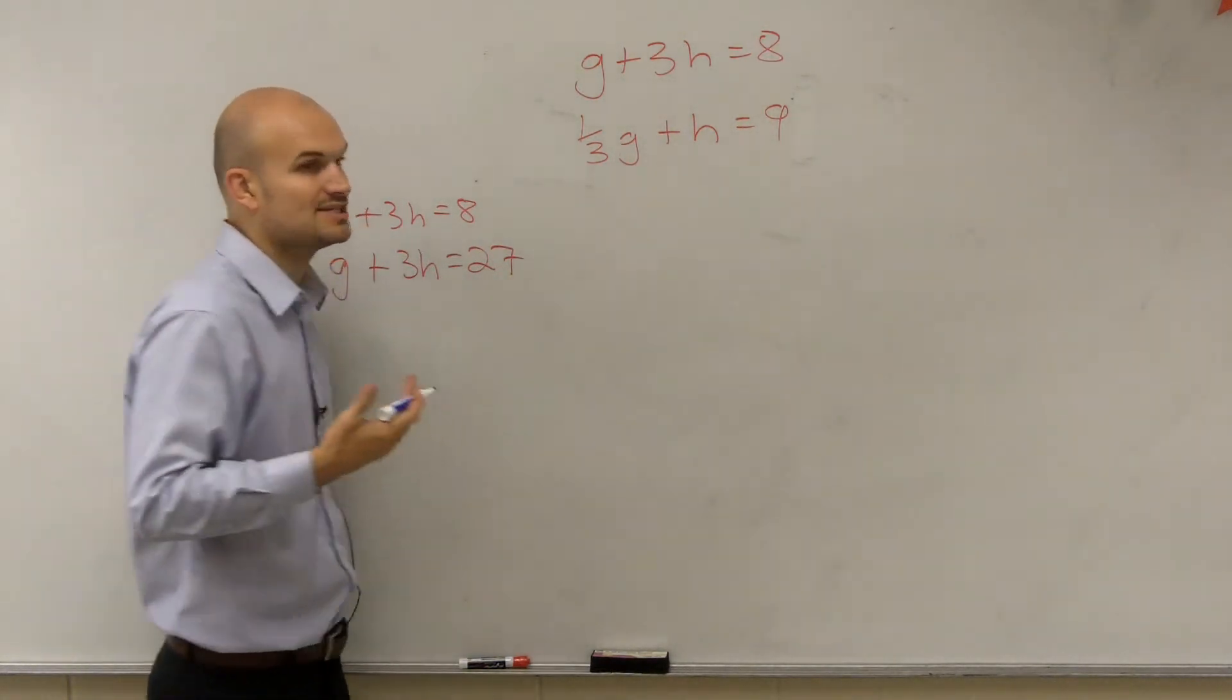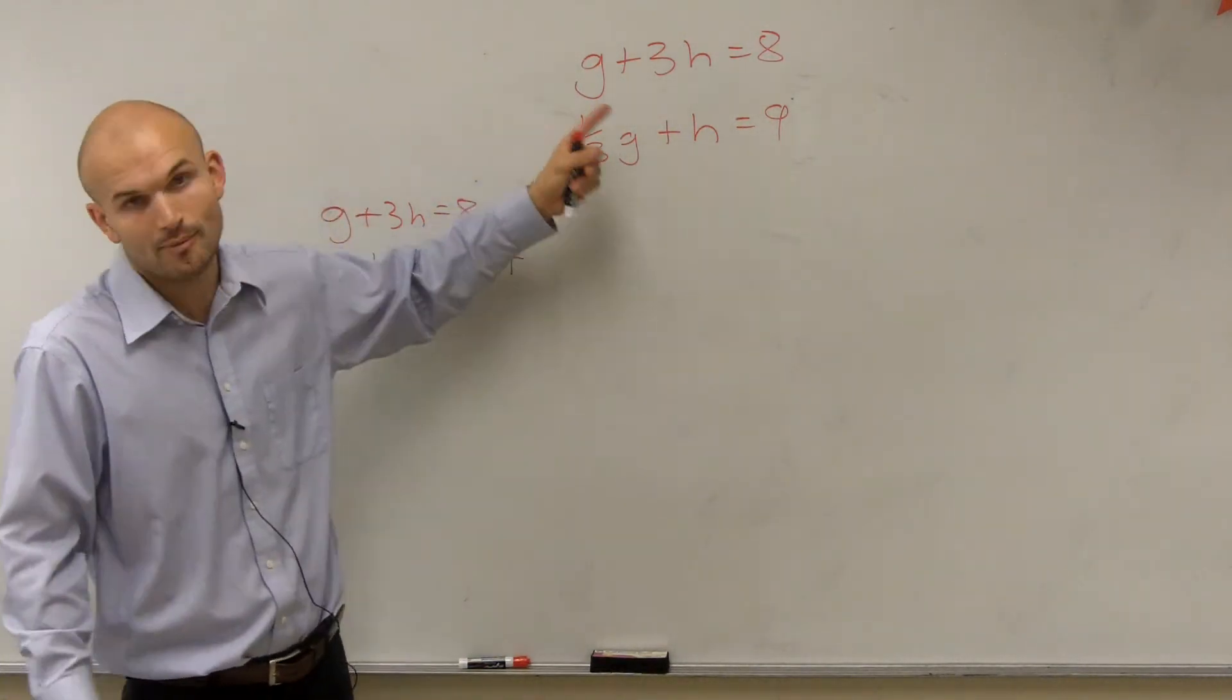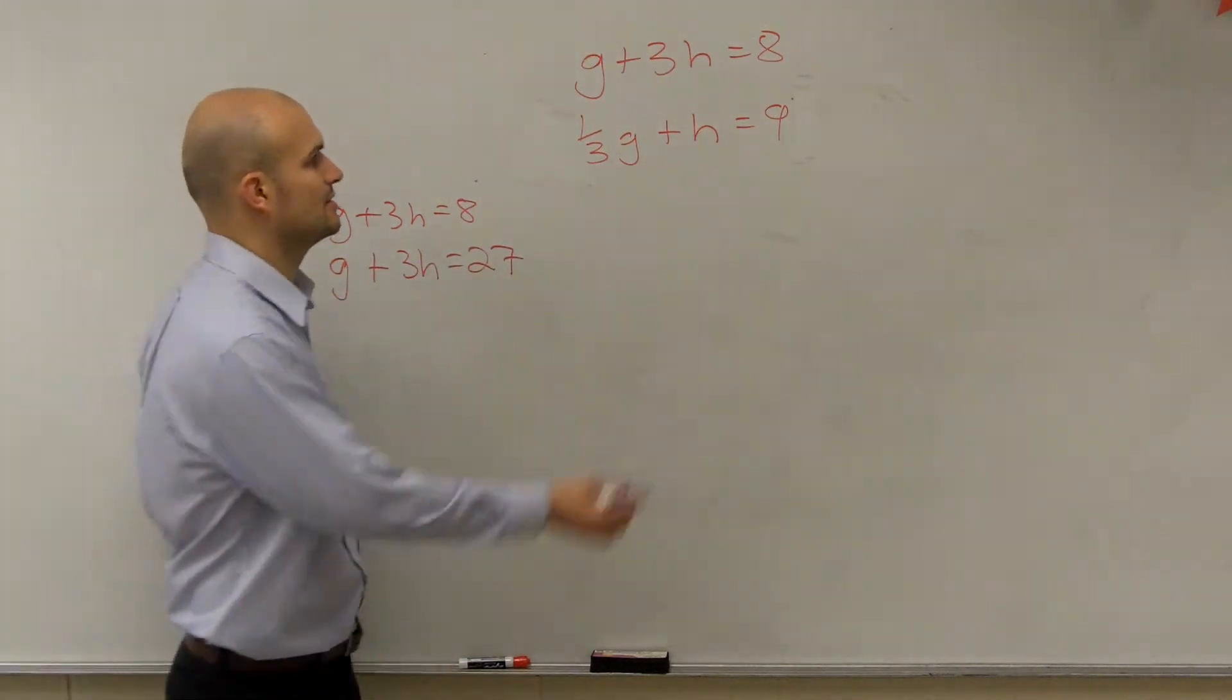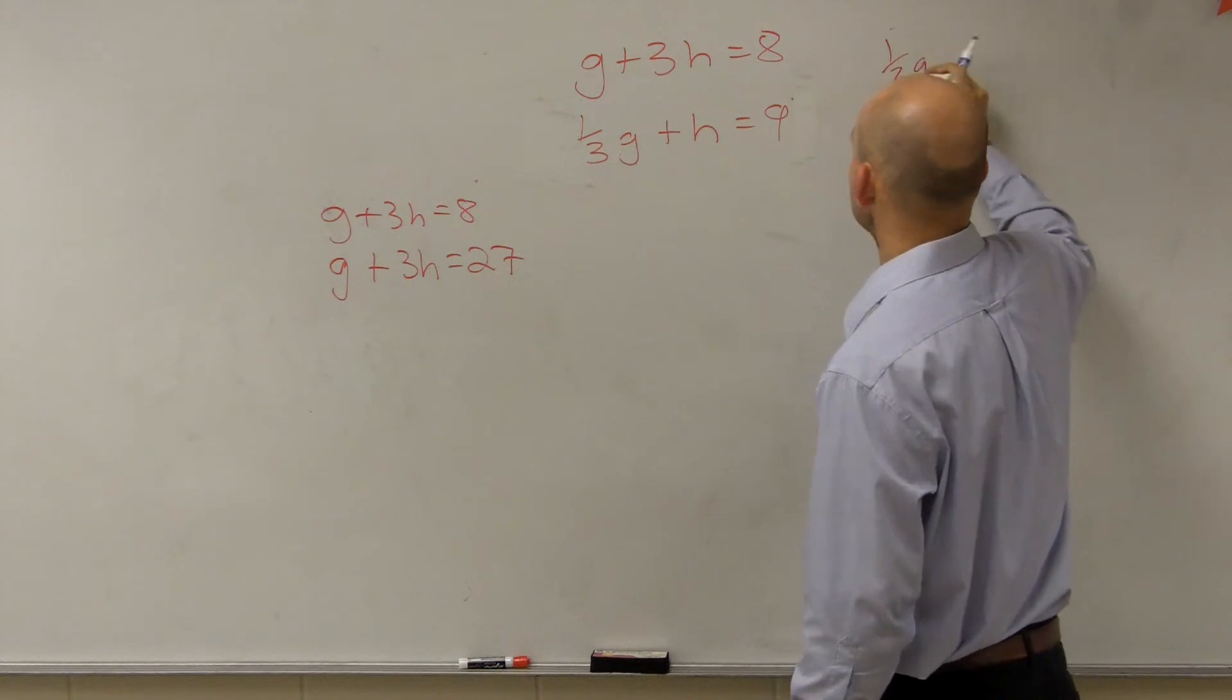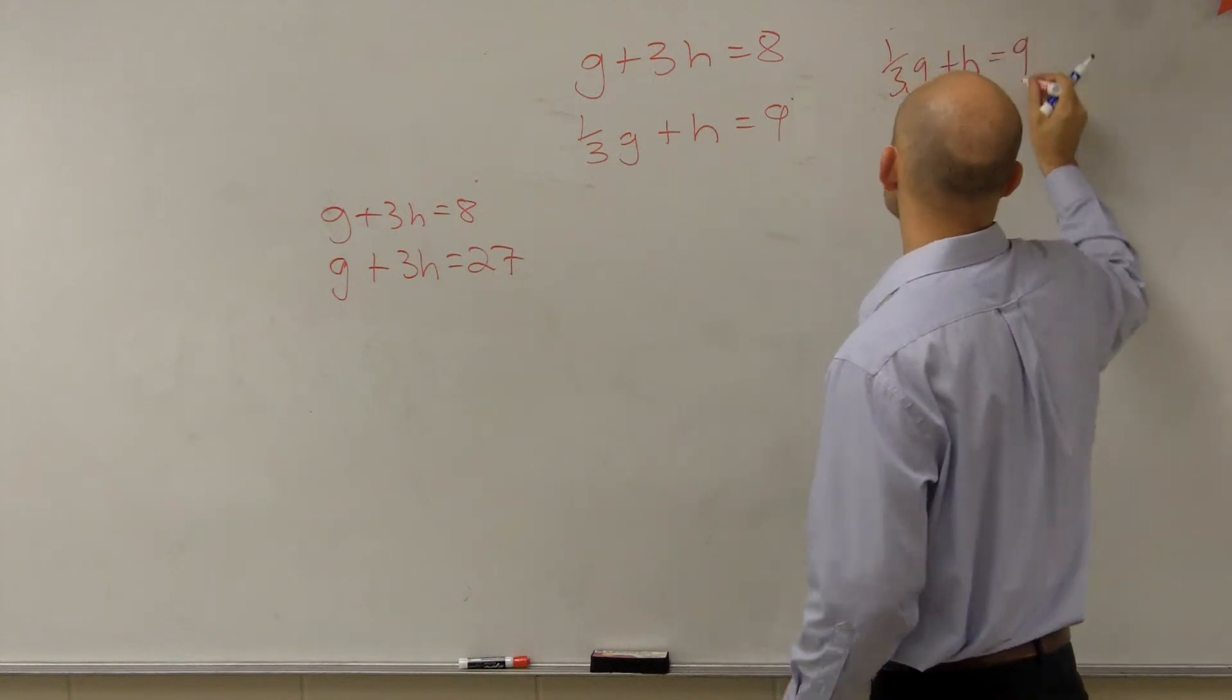So again, remember, we need to solve for one variable or the other. You could either solve for g or you could solve for h. In this term, I'm going to solve for h. So I have 1/3 g plus h equals 9.